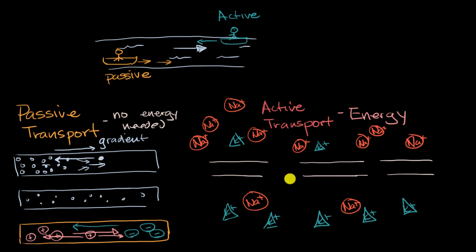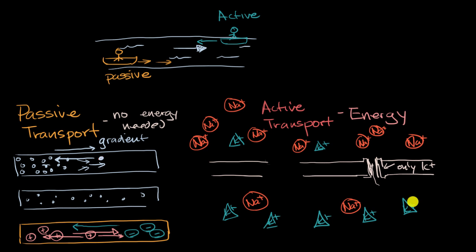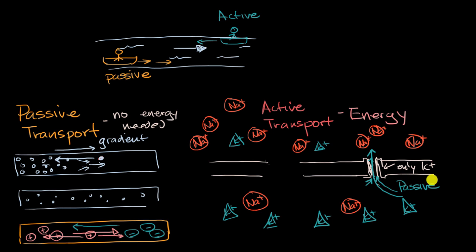If on this membrane there is a channel that is open only to potassium, what happens? You would have passive transport. The positively charged potassium ions would go down their concentration gradient — from high concentration inside to low concentration outside — through this channel. This would be passive transport.